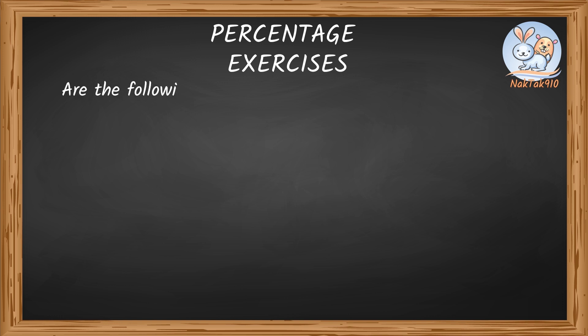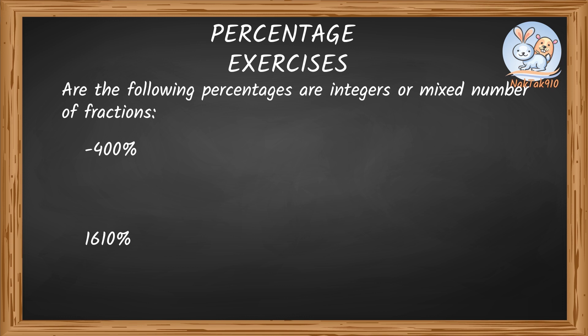Tell me if the following percentages are integers or mixed number of fractions. First is negative 400%, then 1610%. Negative 400% means negative 400 by 100, and that's negative 4, which is nothing but an integer. 1610% means 1610 by 100, and that's simplified as 161 by 10. This is a mixed number.